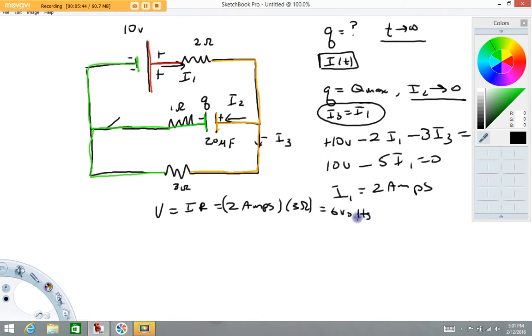So now we know the potential difference between green and yellow is 6 volts, and as we inspect our circuit, and I look at the capacitor, green, yellow, so now we know there's a 6 volt potential across the capacitor.